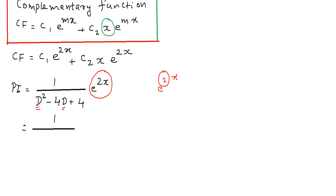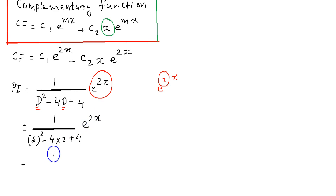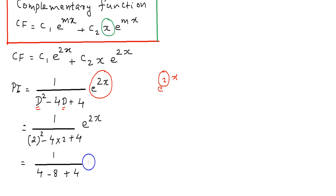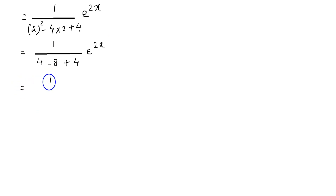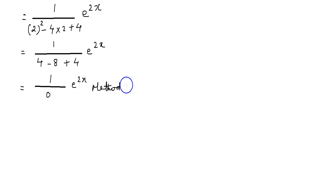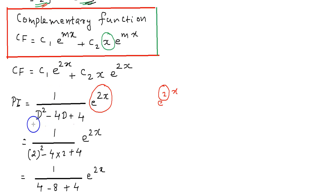Replace D² with 2², and -4D with -4×2, plus 4, then multiply by e^(2x). That gives 1/(4 - 8 + 4)·e^(2x), which gives the denominator 0. The denominator becomes 0, making an indeterminate form, so this method fails. Whenever this method fails, we switch to another method.